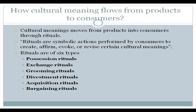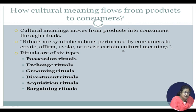The second part of the model is how cultural meaning flows from products to consumers. Cultural meaning moves from products to consumers through different kinds of rituals — symbolic actions performed by consumers to create, evoke, or revise certain cultural meanings. There are six types of rituals through which cultural meaning flows from products to customers.